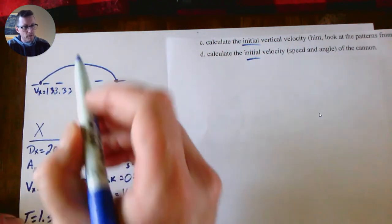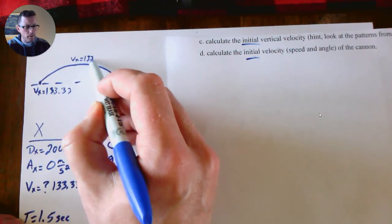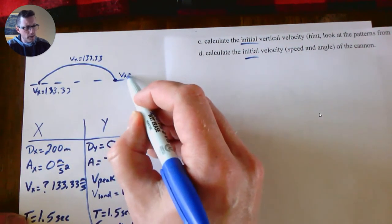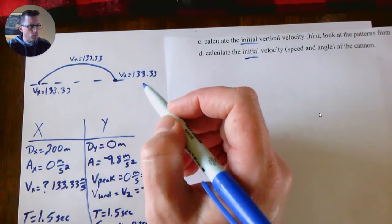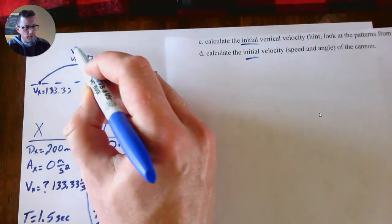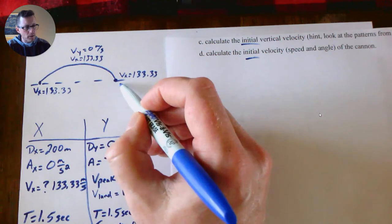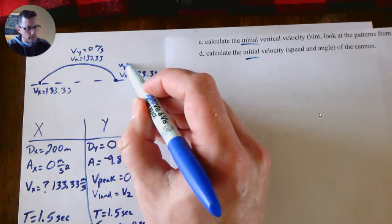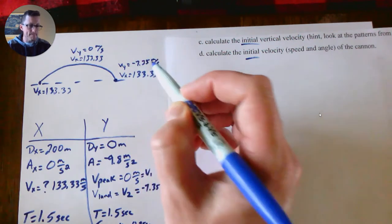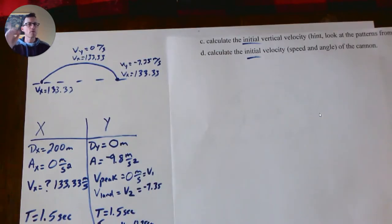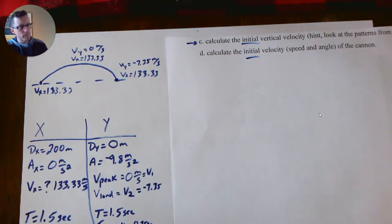We now know the Vx everywhere. You know, the Vx here was 133.33. We know the Vx at the peak is 133.33. We know the Vx when it lands is 133.33. We also already figured out that the Vy at the peak is 0, and we just calculated that the Vy when it lands is negative 7.35.